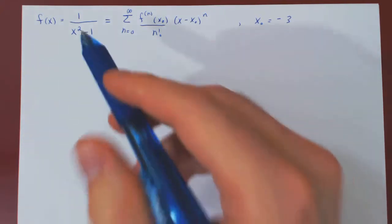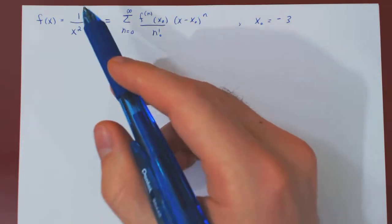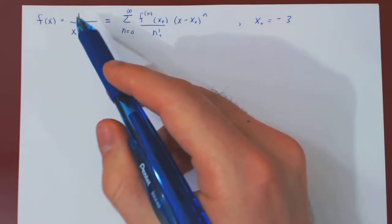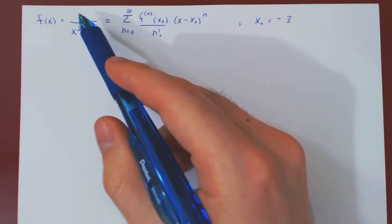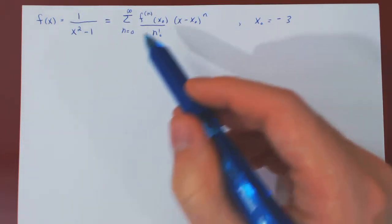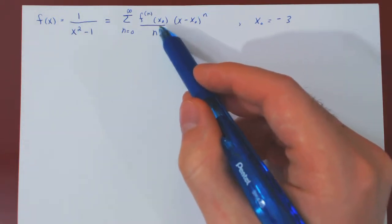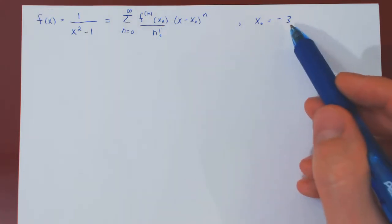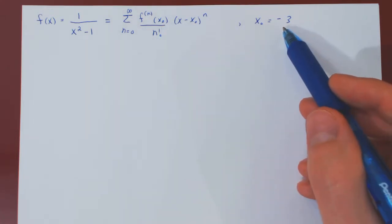In this video, we will find the Taylor series of the function 1 over x squared minus 1, centered at negative 3.